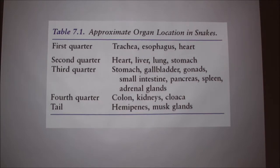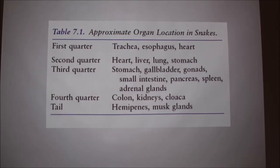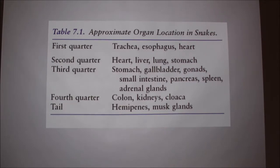So basically, in identifying, you can in general split the organs into different quarters. In this example I took from a textbook, they split it from: the trachea, esophagus, and heart; to the heart, liver, lung, and stomach; to the stomach, gallbladder, gonads, intestines, pancreas, and spleen. And then the fourth quarter is the colon, kidneys, cloaca, hemipenes, and musk glands.